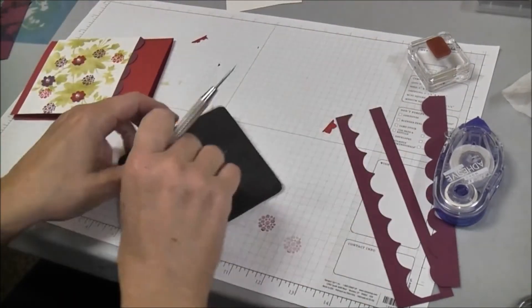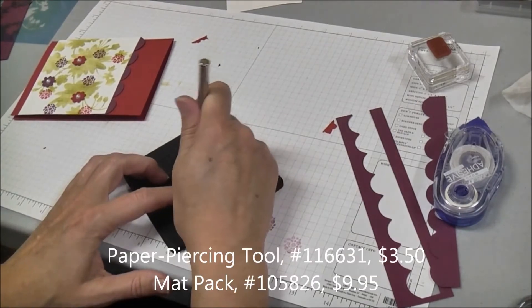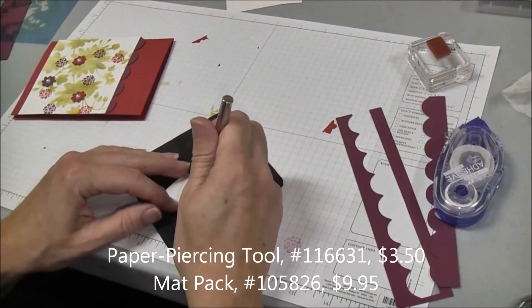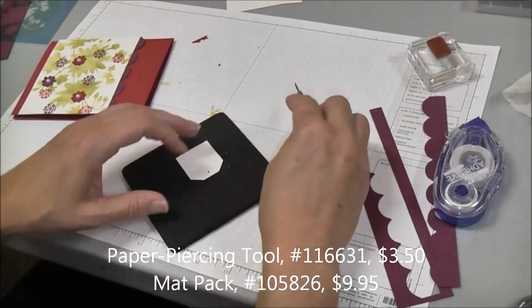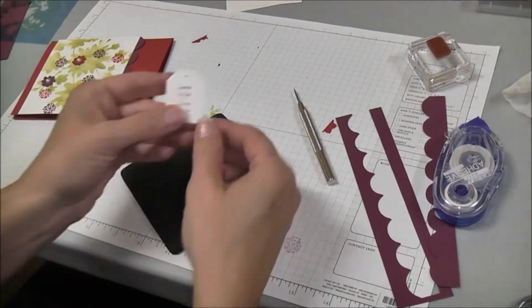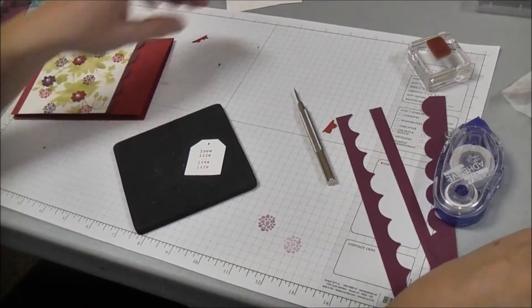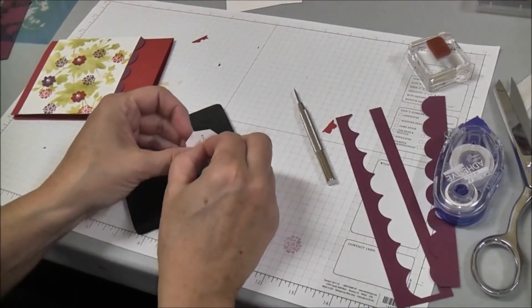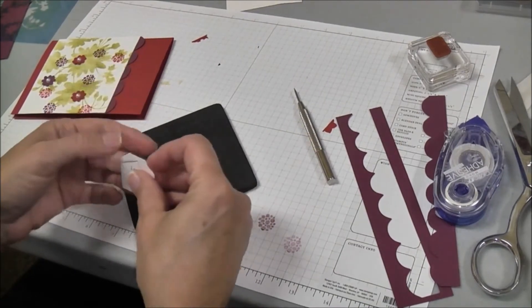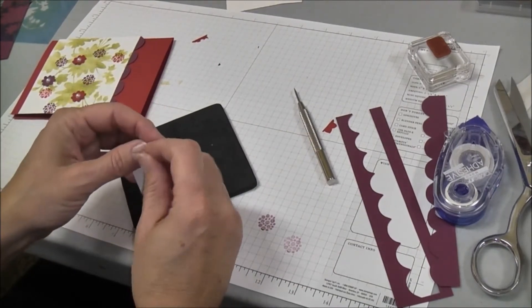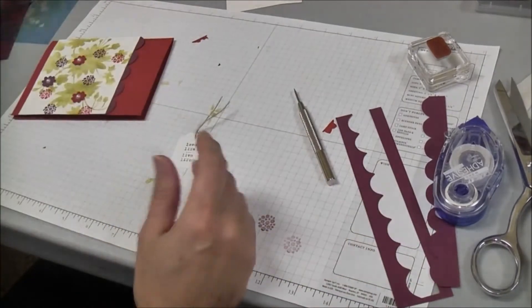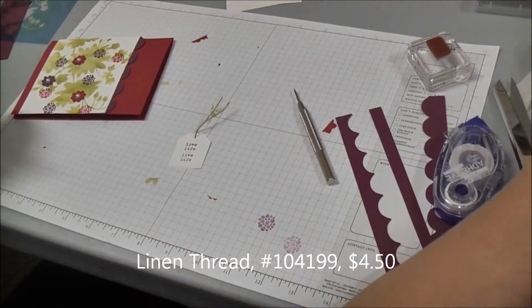To make our tag I'm going to use my paper piercer and make a little hole in the top of the tag so that I can run some linen thread through it and tie it onto my bow. The way I did this is just to add a little bit extra to it.